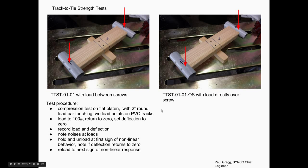So when you don't have finite element models, and even when you do, sometimes it's just easier to build and test something. I want to know how strong this joint is between the PVC track and my wooden tie with two screws pointed at an angle down. So why not build some little test specimens and push on them until they break?